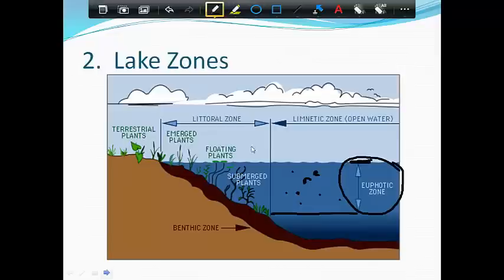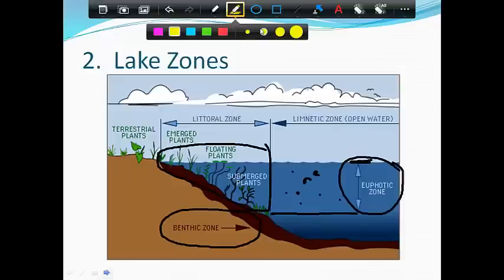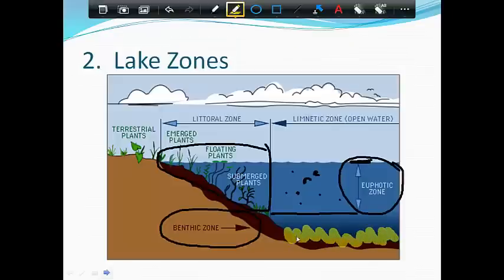Also, the entire littoral zone is euphotic. Plenty of light there. Now, when we get to the deeper regions of lakes where there isn't enough light to get plants to grow, we call that area the benthic zone. And that's the area that you colored before down here at the bottom. So, the benthic zone is where there's not enough light for plants to grow, often filled with decomposing materials like algae and dead fish and snails and mussels and things like that.